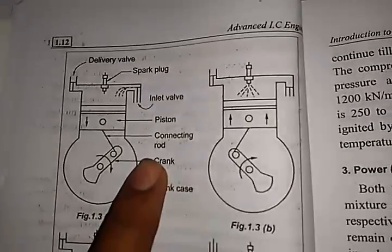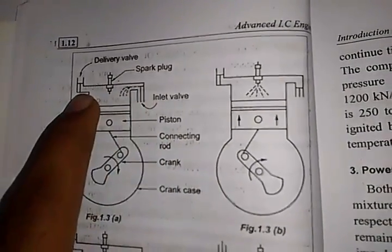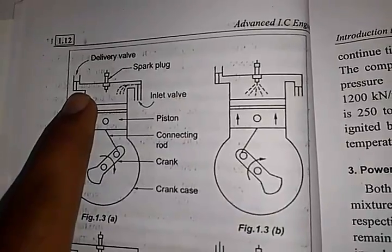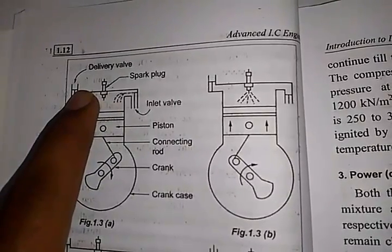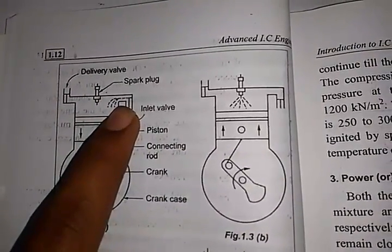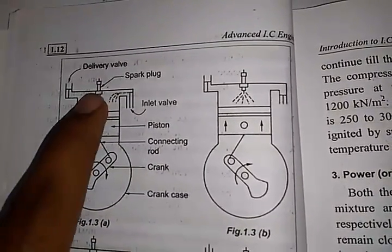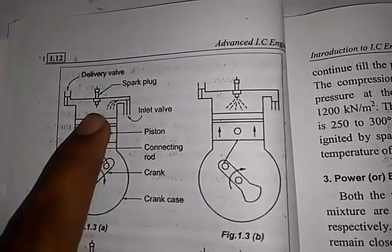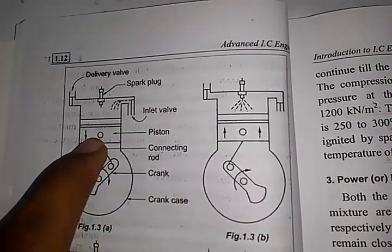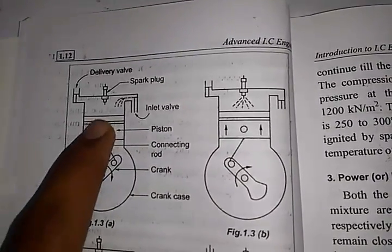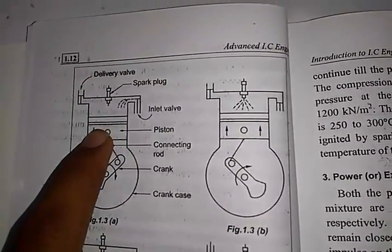Here we can see the four-stroke petrol engine. In the four-stroke petrol engine, the inlet port and outlet port are located at the head of the cylinder. Through the inlet port, the air-fuel mixture enters the cylinder, and through the exhaust port it exits after combustion. The spark plug ignites the air-fuel mixture, initiating the combustion process, and the power stroke reciprocates the piston from top to bottom and bottom to top.